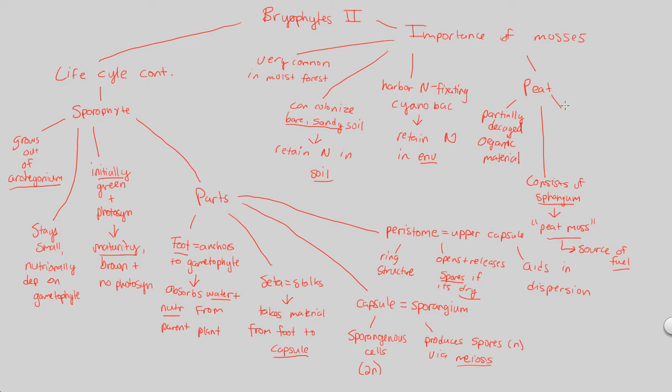So peat moss and sphagnum are both usually considered the same thing, just a different way of saying it. And if you burn it, you can actually use it as a fuel source. In addition, final, last point, peatlands, which are basically areas full of peat moss, cover about 3% of the Earth's surface. 3% is a small number, right? But remember, most of the Earth is water. But let's say you take out all that water surface and you have just land, 3% is actually a lot. And the Earth is a pretty big place, last time I checked. So 3% as a whole is actually a decent number.